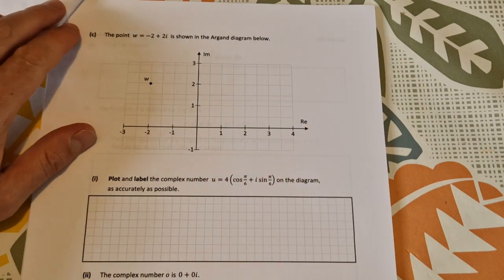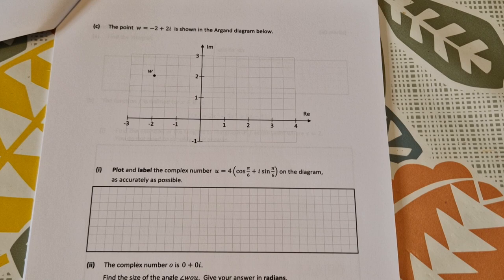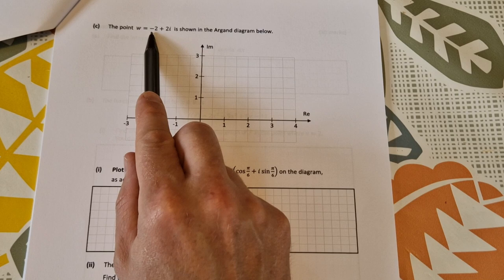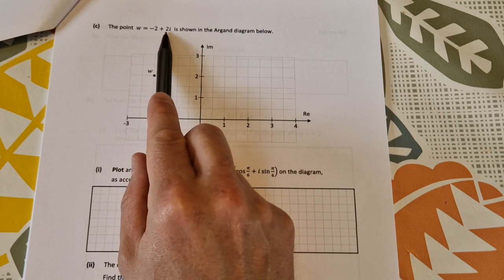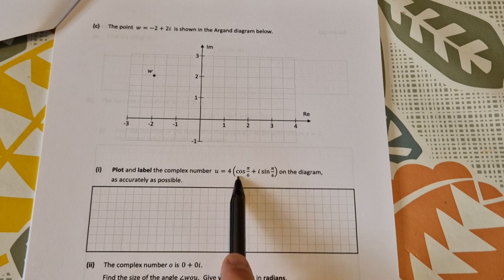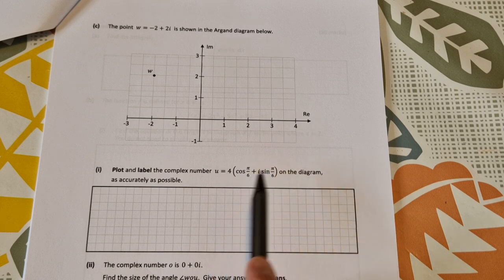And on to part C. Part C, we're given an Argand diagram here, and we're asked to plot the point w is equal to minus 2 plus 2i, sorry, that's shown. Plot and label a complex number u, which is 4 cos pi over 6 plus i sine pi over 6.